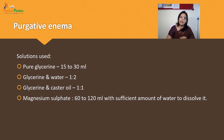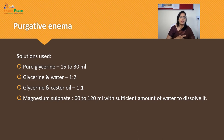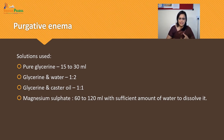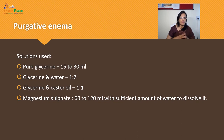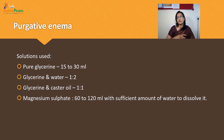Solutions used for purgative Enema include pure glycerin, glycerin and water, glycerin and castor oil in a 1:1 ratio, magnesium sulfate 60 to 120 ml with sufficient water to dissolve it, and magnesium sulfate, glycerin, and water in a 1:2:3 ratio.